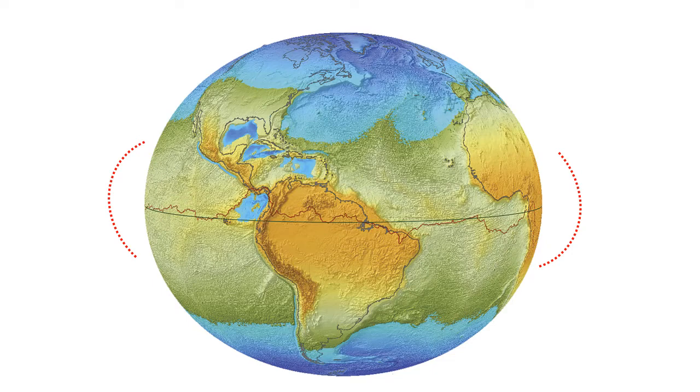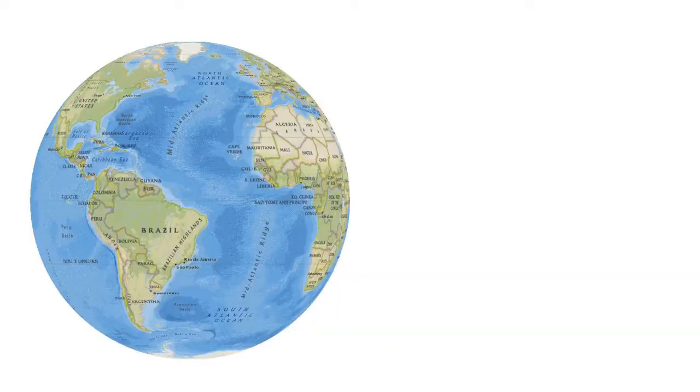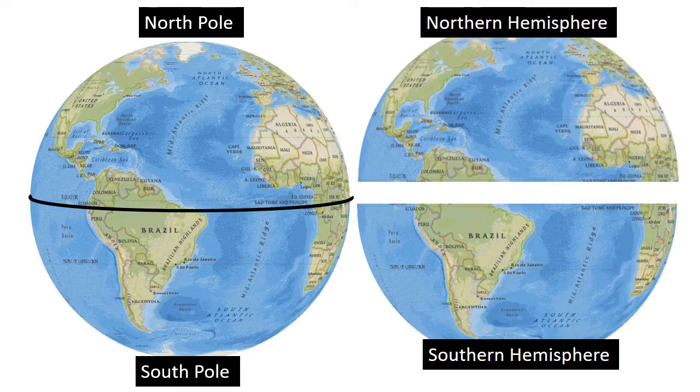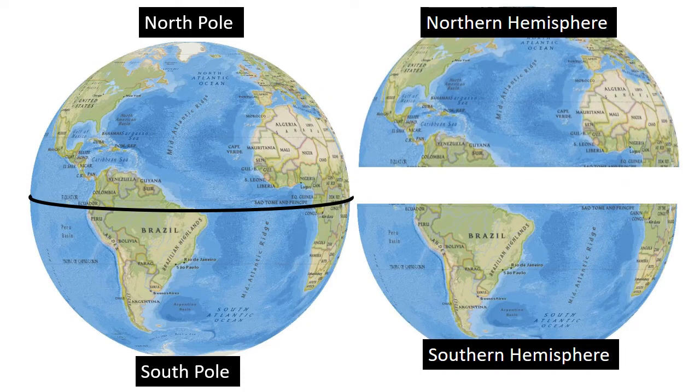So the question is, what is the equator? Well, the equator is an imaginary circle around the Earth that goes halfway between the North Pole and the South Pole, and it divides the Earth into two equal parts.